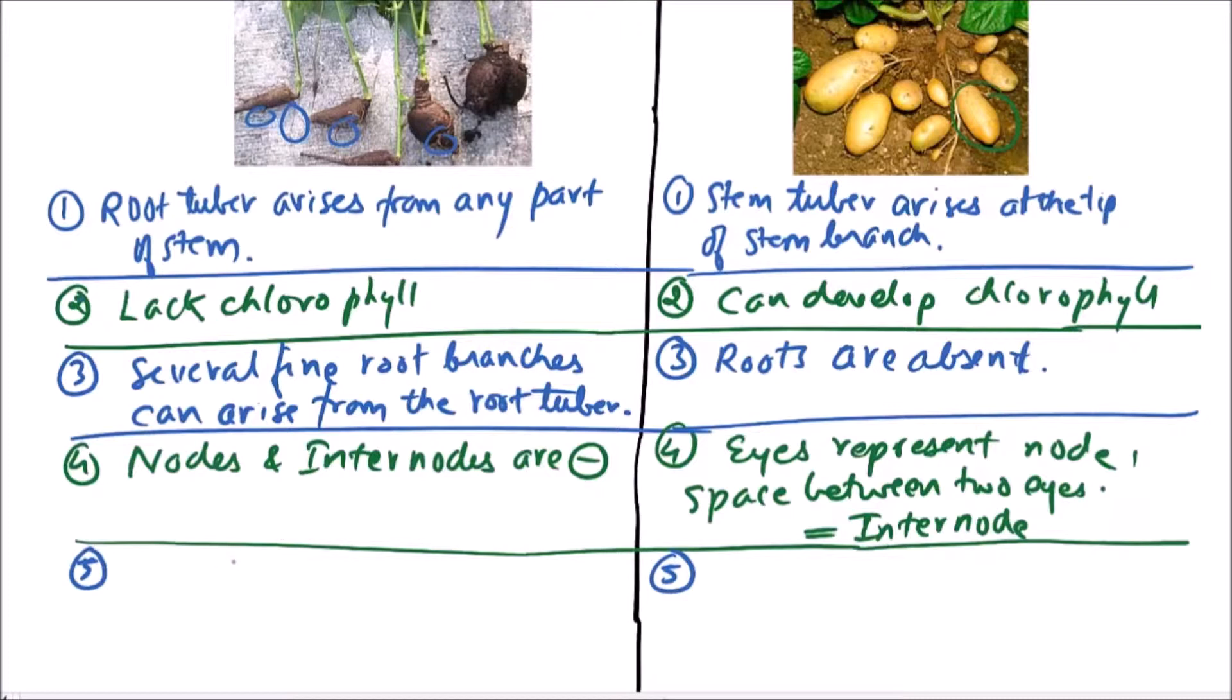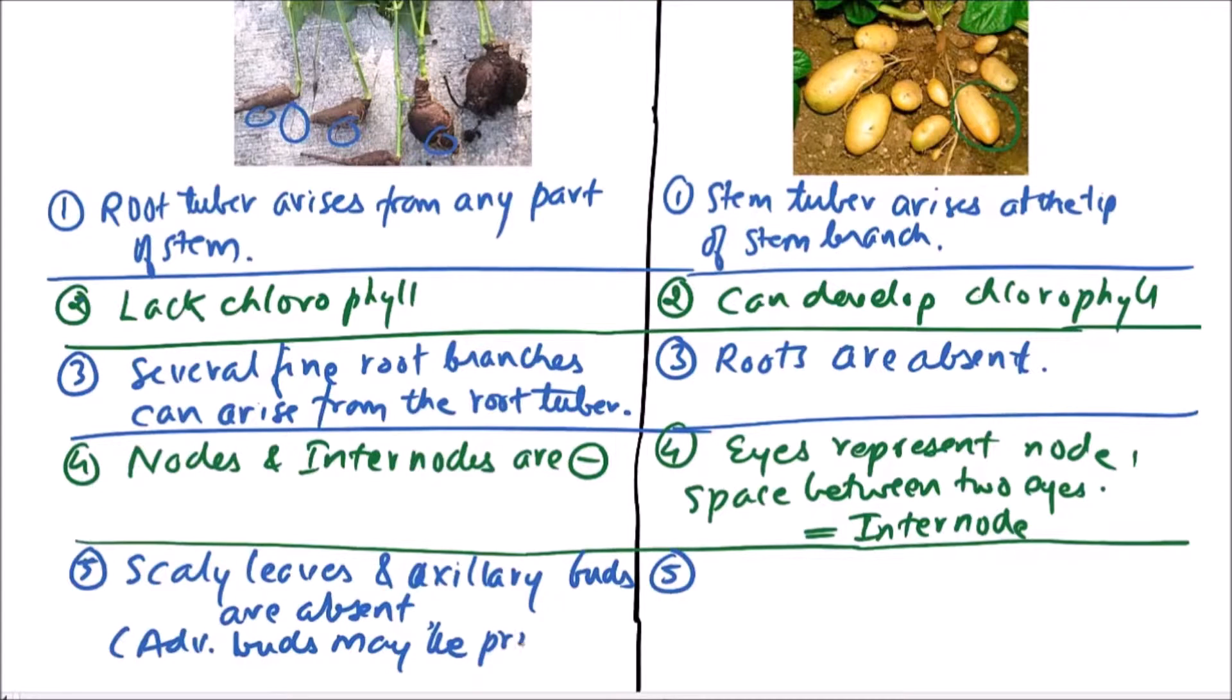Scaly leaves and axillary buds are absent in root tubers. It is possible that adventitious buds may be present.